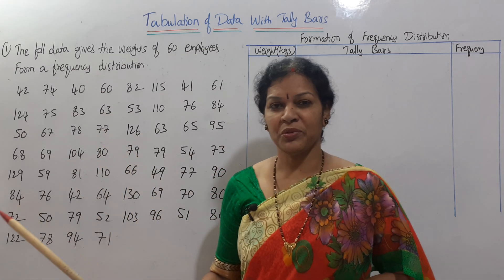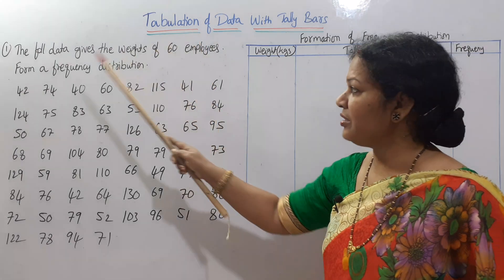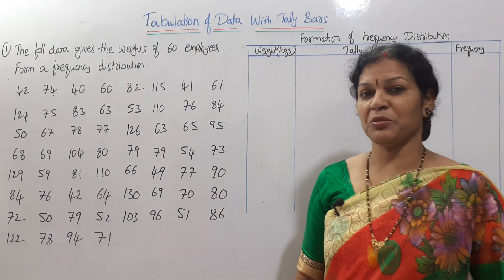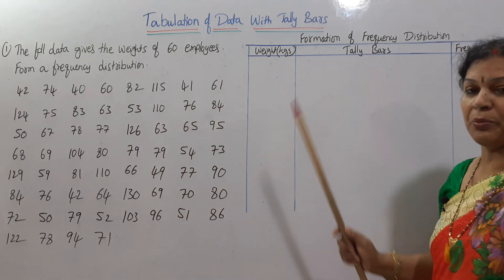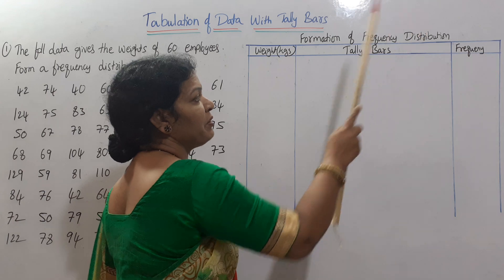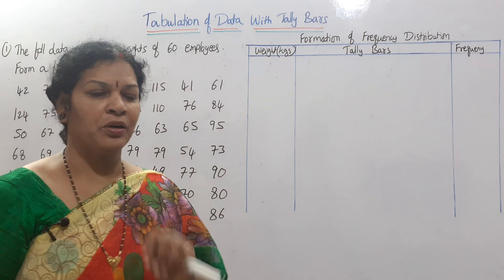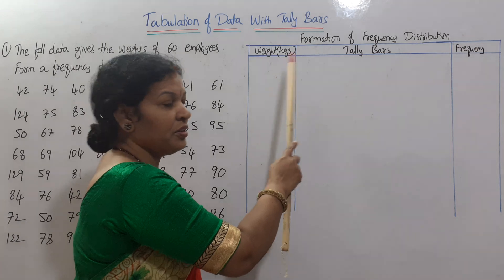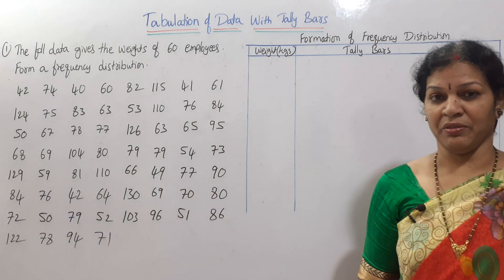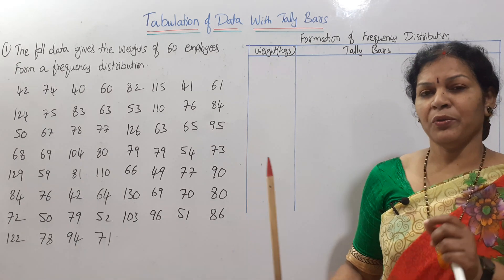So through this simple problem I'll explain. The following data gives the weights of 60 employees — we have to form a frequency distribution. Formation of frequency distribution means we have to prepare this table. Only three columns we need: weight, tally bars, and frequency. The weights of 60 employees are given and we have to prepare the table.